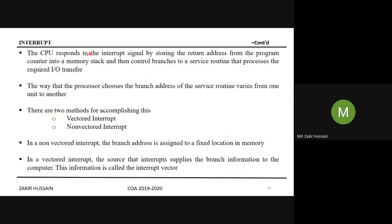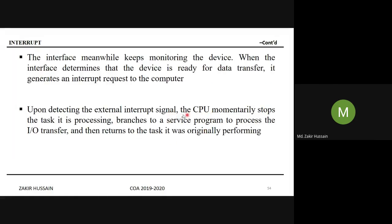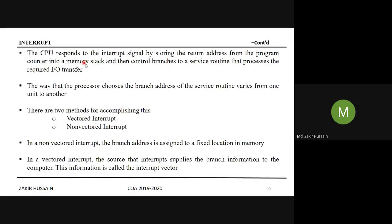The CPU responds to the interrupt signal by storing the return address from the program counter into the memory stack, and then control branches to the service routine. Before attending the service program, the CPU preserves its registers somewhere in the memory stack, and then control branches to the service routine.